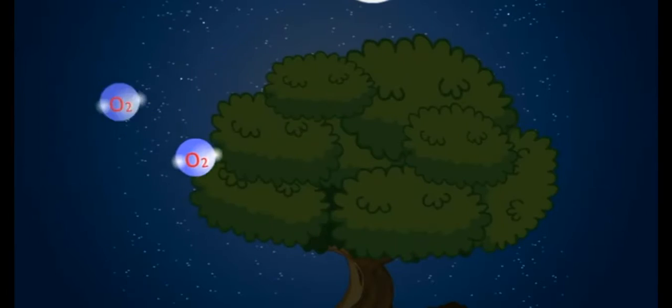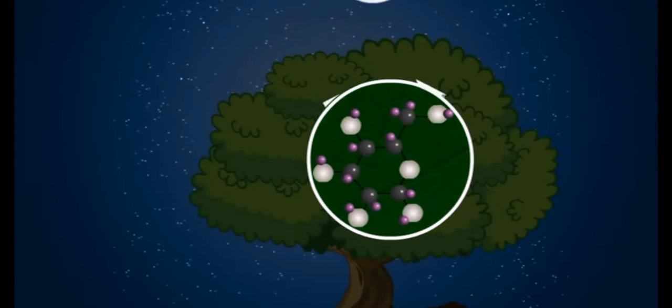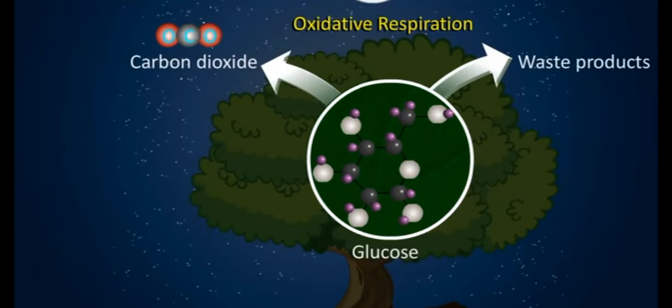Plants produce carbon dioxide during oxidative respiration at night by breaking down glucose into carbon dioxide and other waste products.